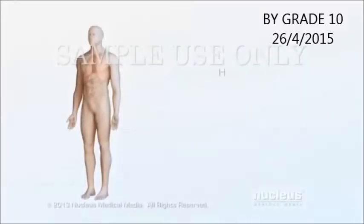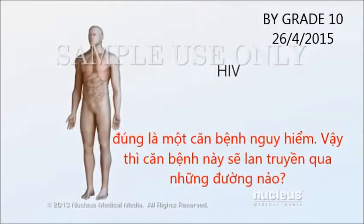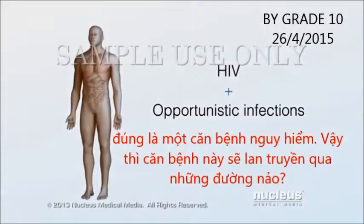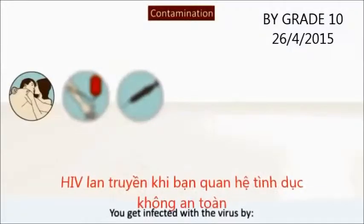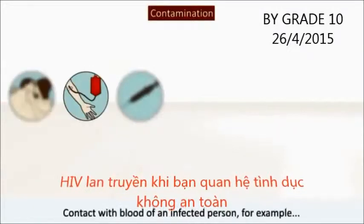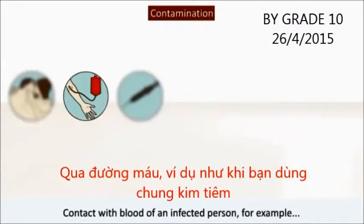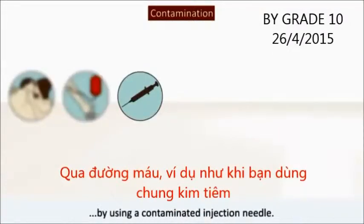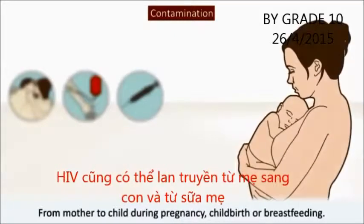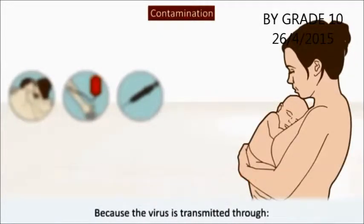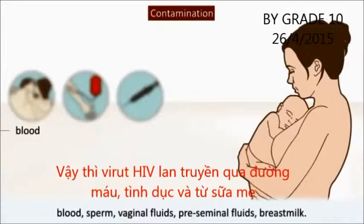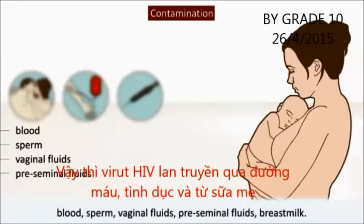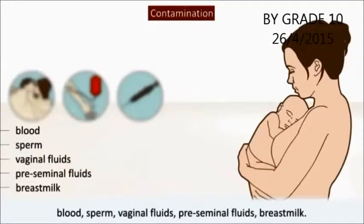If you have an HIV infection and one or more opportunistic infections, you have AIDS. You can get the virus by unsafe sex, contact with blood of an infected person — for example, by using a contaminated injection needle — or from mother to child during pregnancy, childbirth, or breastfeeding, because the virus is transmitted through blood, sperm, vaginal fluids, pre-seminal fluids, and breast milk.